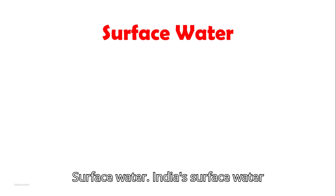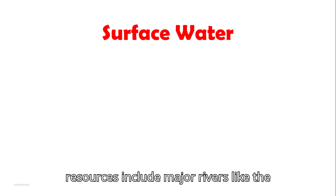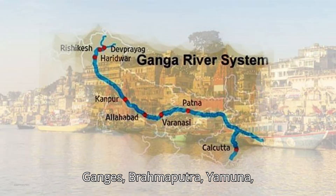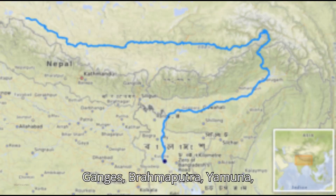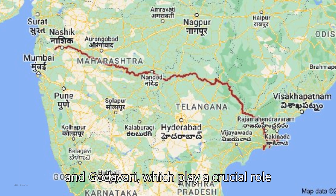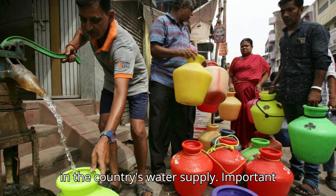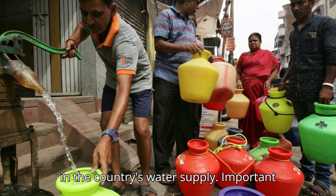India's surface water resources include major rivers like the Ganges, Brahmaputra, Yamuna, and Godavari, which play a crucial role in the country's water supply.